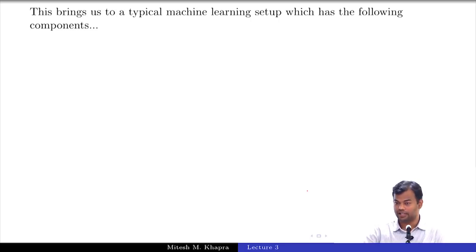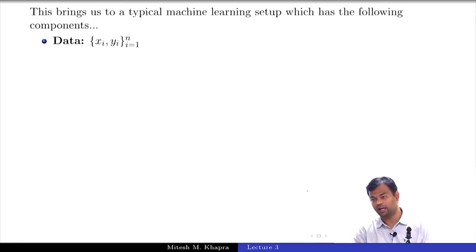Again, whatever weights we want to learn, we are going to be driven by some error function and we would want to minimize that error function. So this brings us to a typical machine learning setup which has the following components. This perhaps is the most important slide in the course, and I will say this at least for 100 other slides in the course, but at least for now this is the most important. So you are given some data (x_i, y_i) and you are given n such elements. Let me just elaborate on this and give you some instances of this.